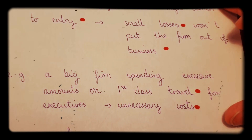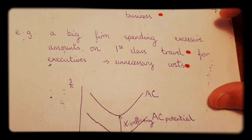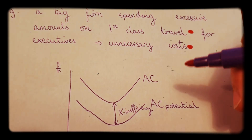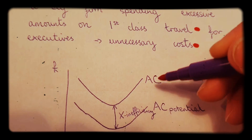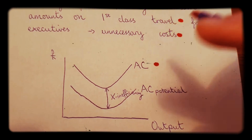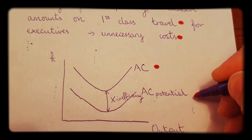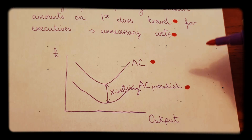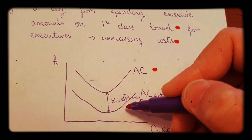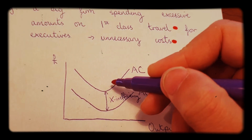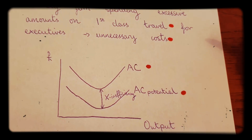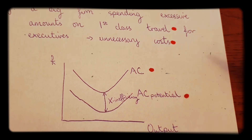On a diagram, we have the monopoly's AC — the average cost curve — and we have a potential AC curve. The monopoly could potentially be producing down on the lower curve, but instead it produces up on a higher AC curve, and the distance between these two curves is the X inefficiency.